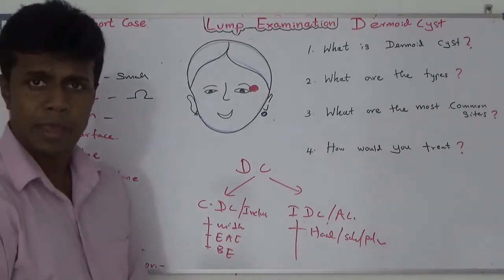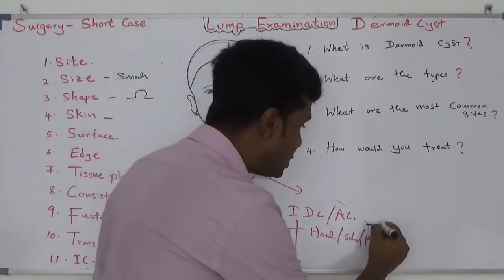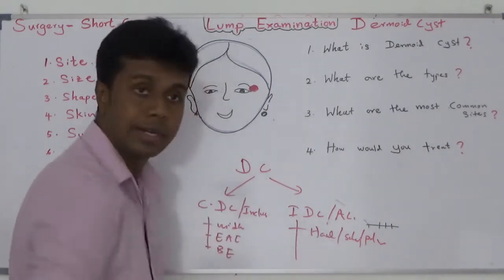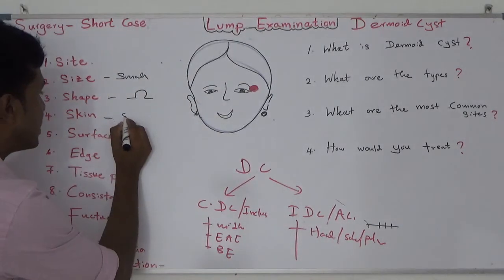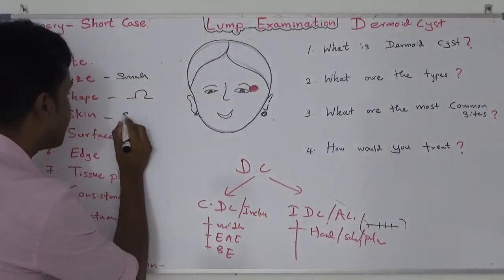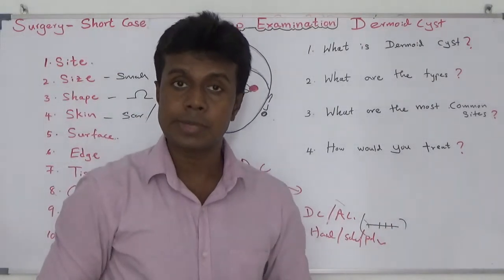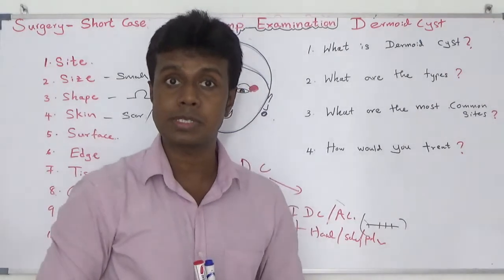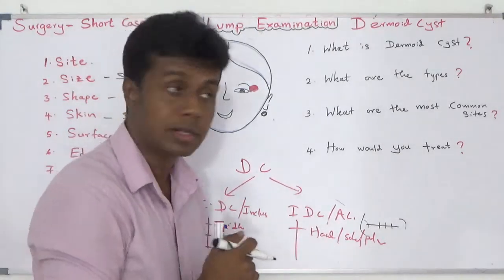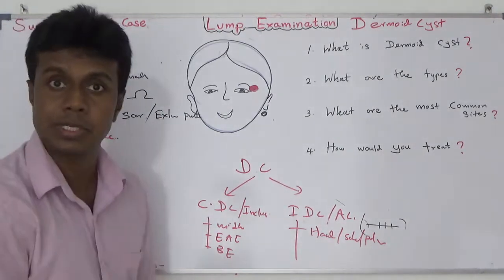When examining the skin over an implanted dermoid cyst, there may be damaged skin or a visible scar from previous trauma. The skin will have healed, but a scar may still be present. These are also common sites for sebaceous cysts, so you must exclude that by specifically looking for a punctum, which is present in sebaceous cysts.